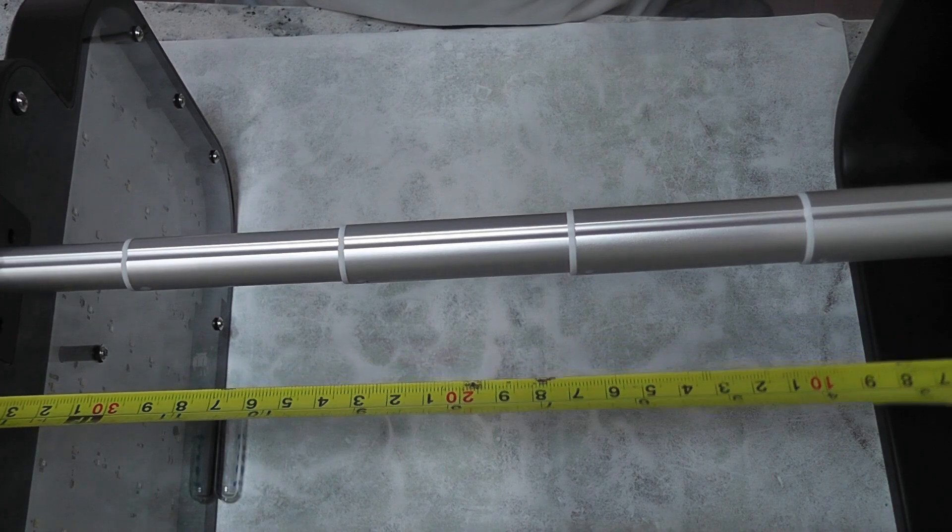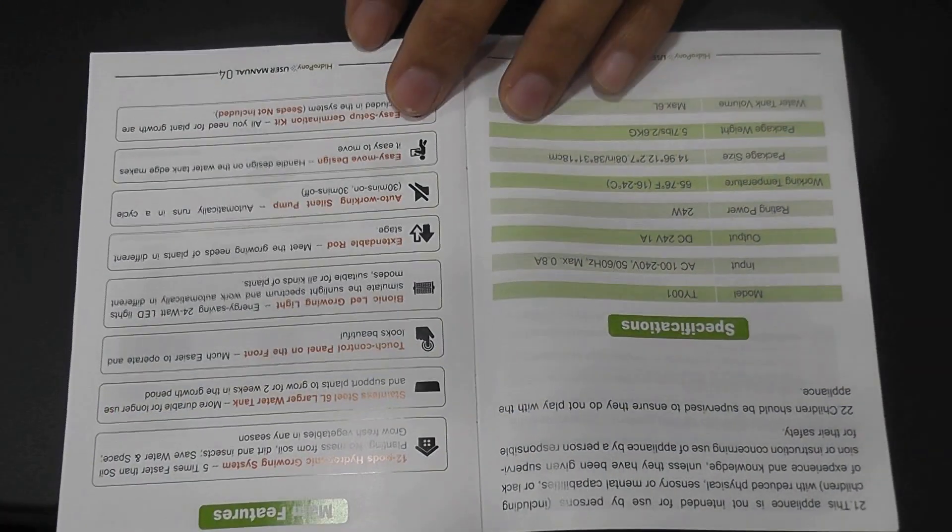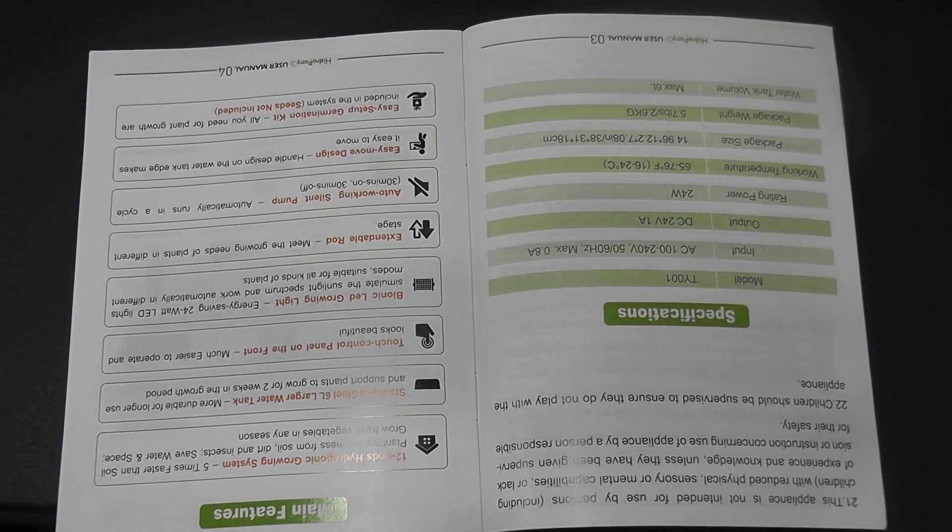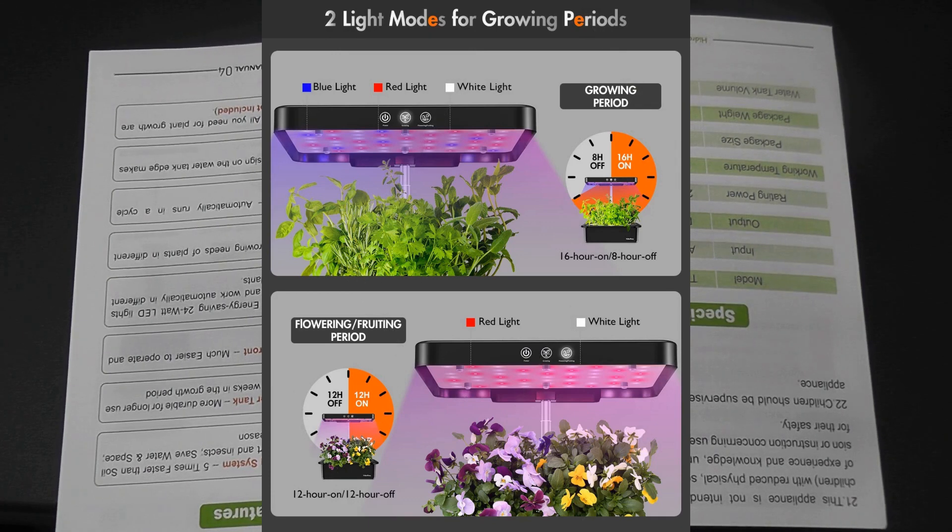Coming to the technical specifications, it comes with 24 wattage full spectrum LED lights. The lights are 16 hours on and 8 hours off in grow mode, and 12 hours on and 12 hours off in flower and fruit mode.